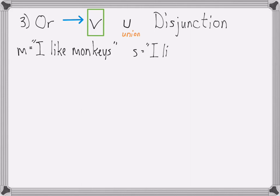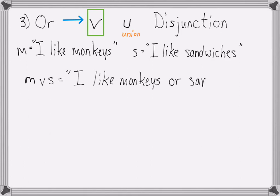For example, if m equals 'I like monkeys' and s equals 'I like sandwiches', then m or s is read as 'I like monkeys or sandwiches'.